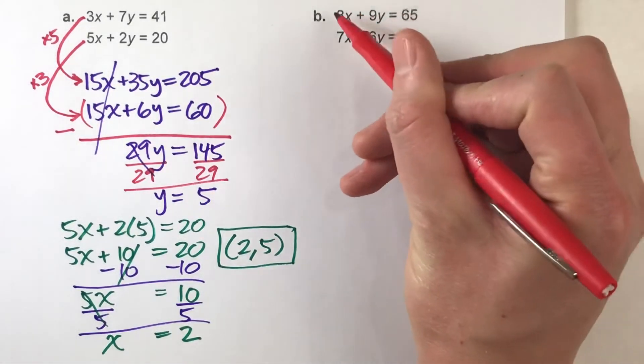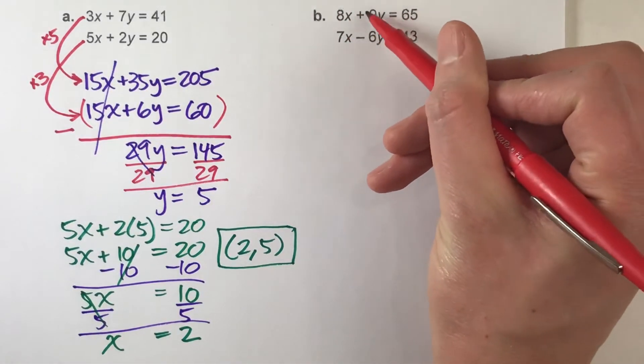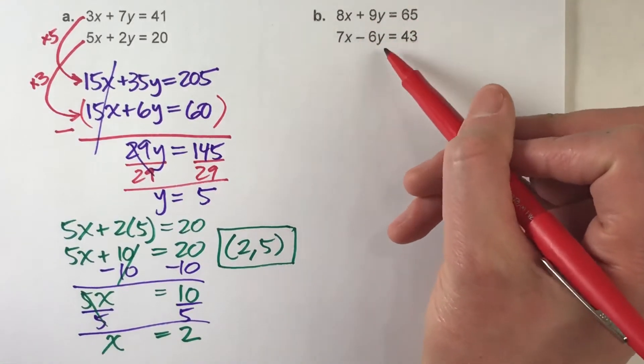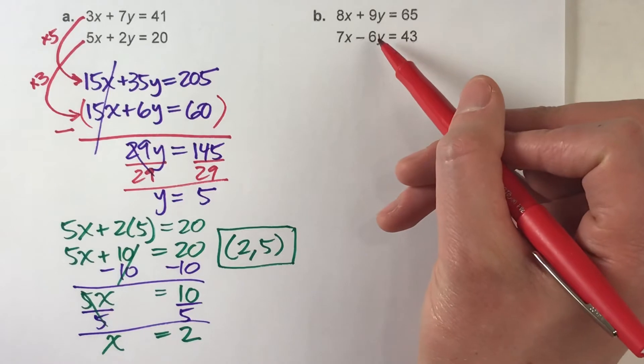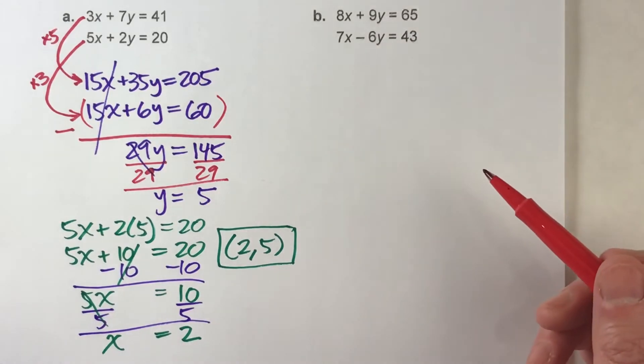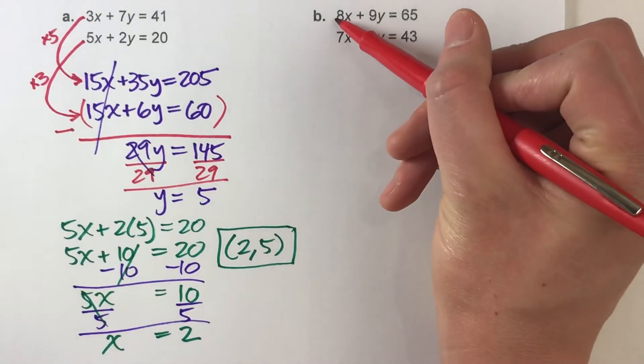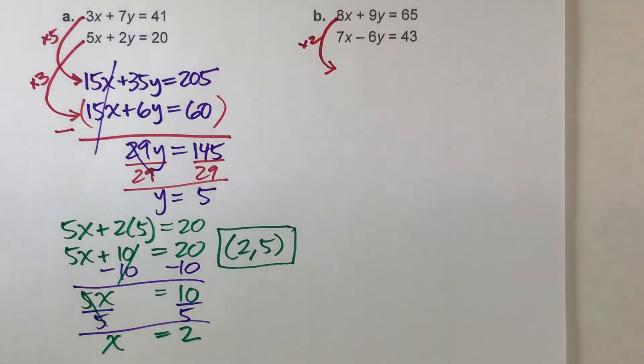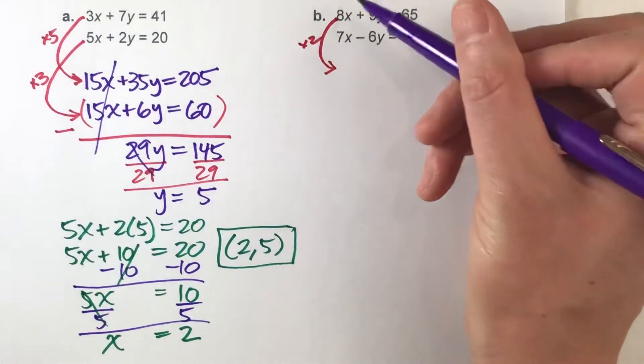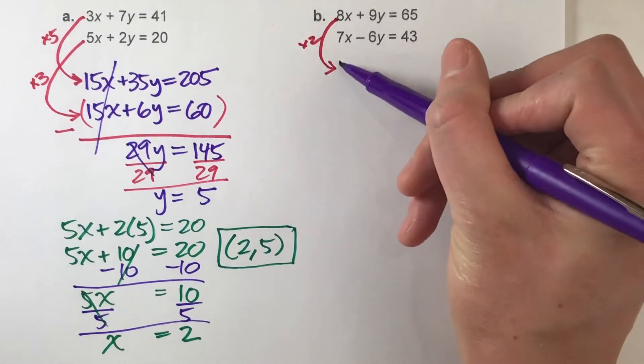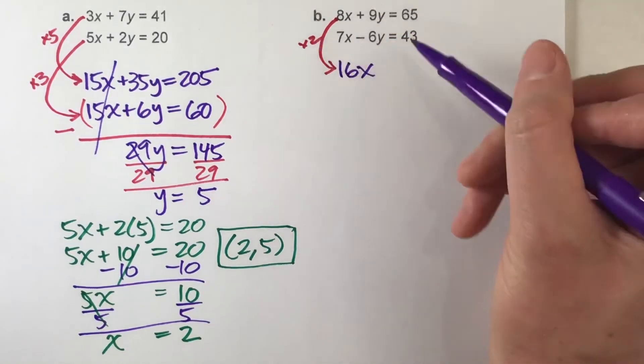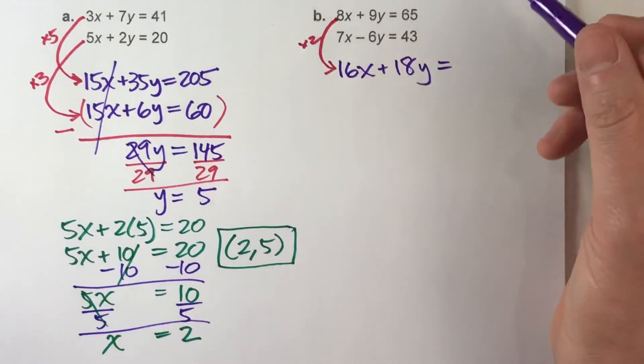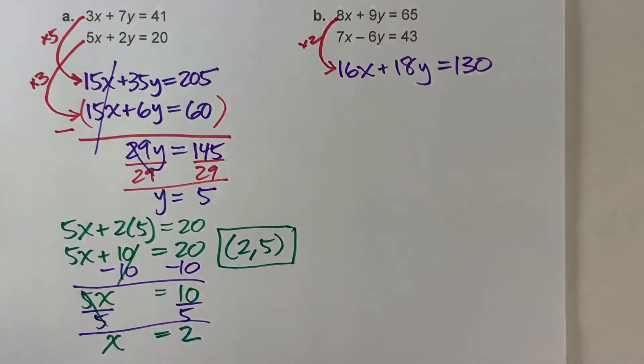So if I multiply the top equation by 2, I'll have 18y. If I multiply the second equation by 3, I'll have negative 18y, and then I can solve the system. So let's do that. First equation, I'm going to multiply by 2, and if I do that, I get 2 times 8x is 16x, 2 times 9y is 18y, and 2 times 65 is 130.